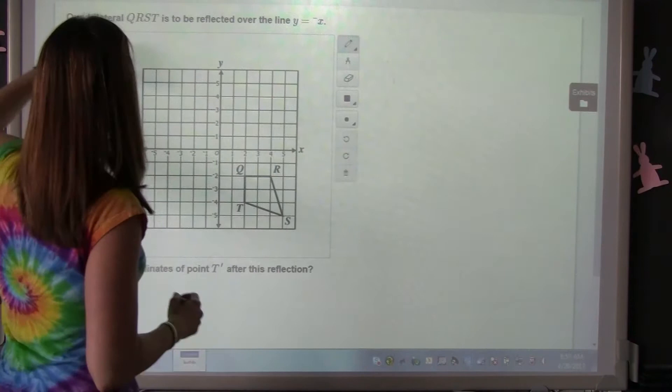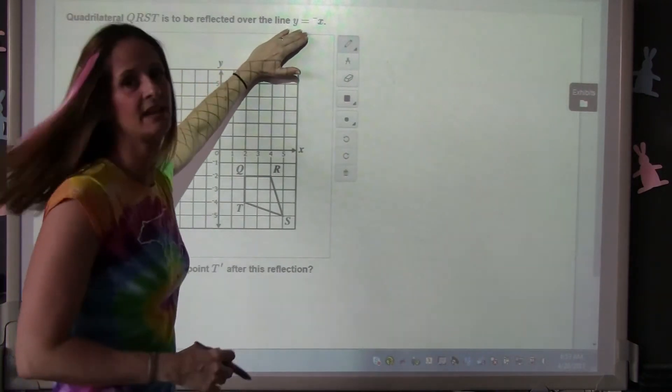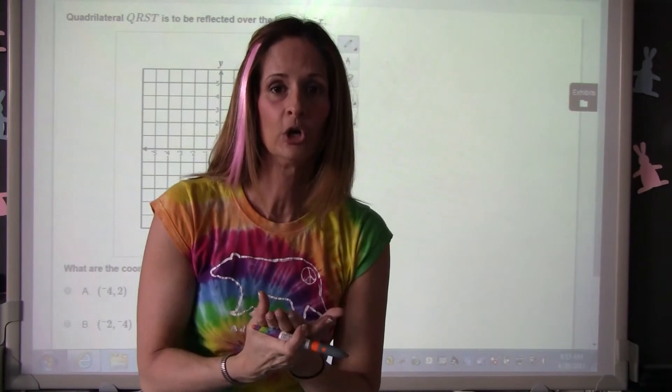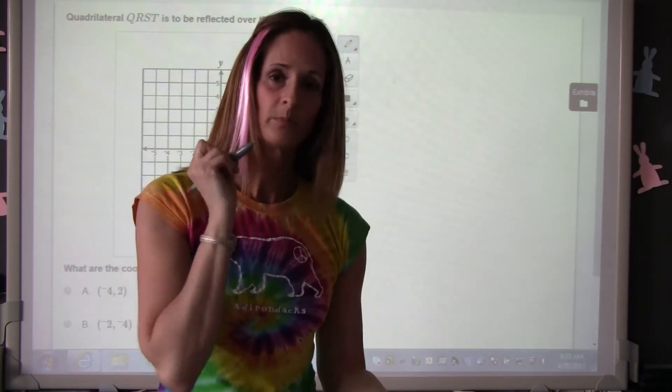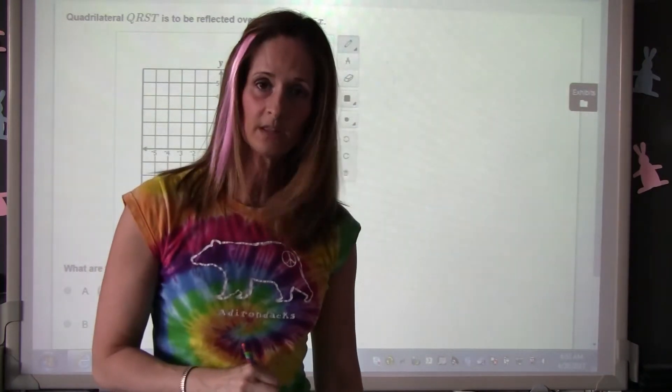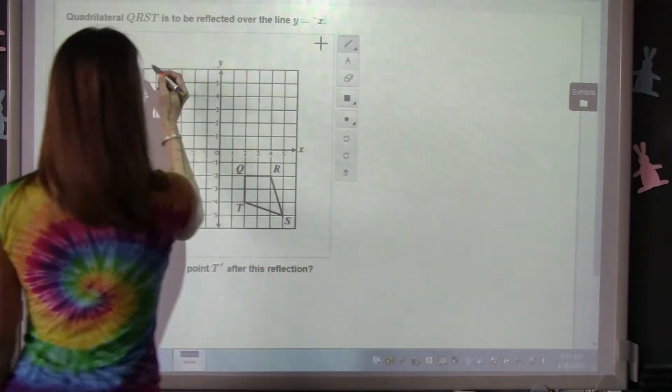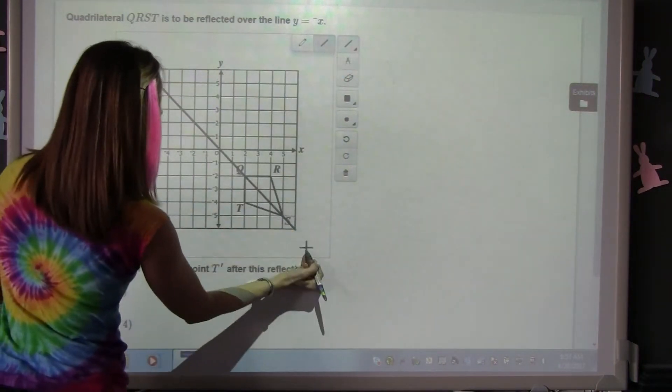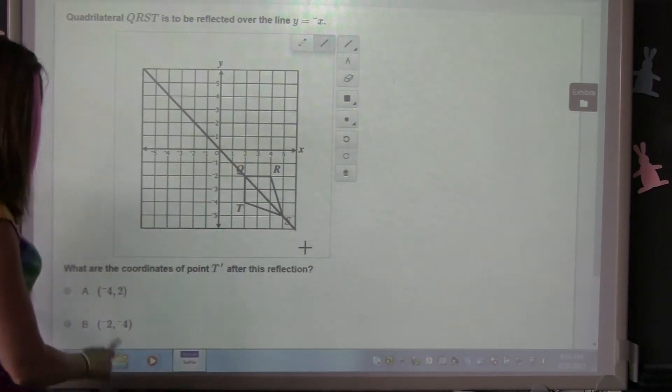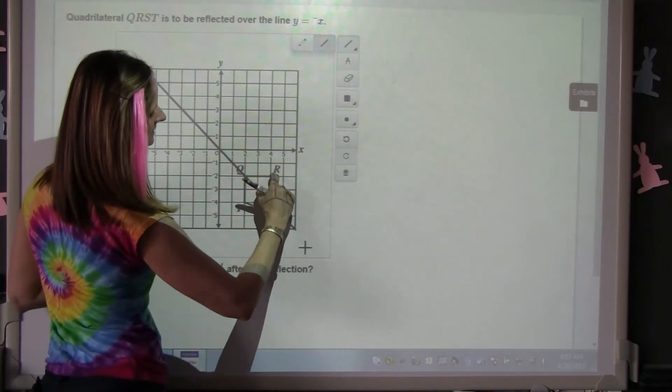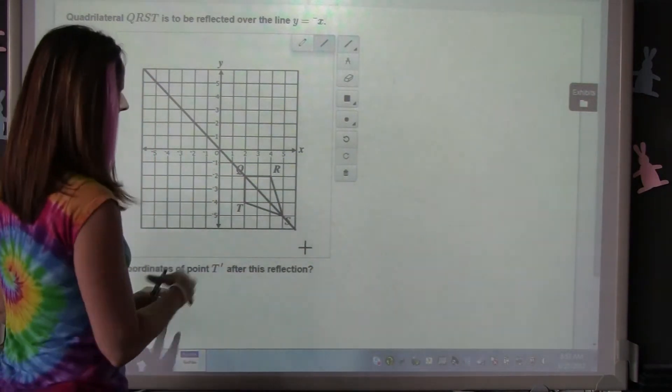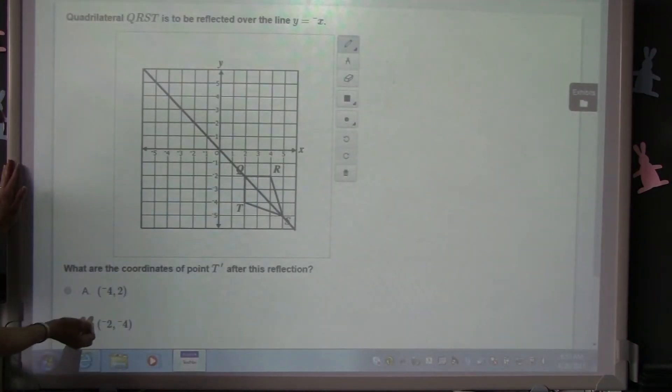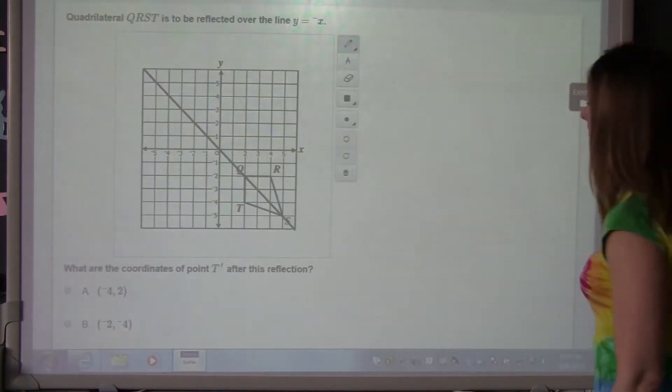This type of question: quadrilateral QRST is to be reflected over the line y equals negative x. If you don't remember how to graph y equals negative x, you also have a calculator. Take out your graphing calculator. Press y equals, graph negative x, take a look at the line. Oh yeah, it looks like this. I forgot to show you how to use this tool. If you go to the pencil and instead of choosing the pencil, choose straight line. There's your y equals negative x. Then you can figure out where does T. T prime is going to be one away from the line, so it's one away on the other side. It's one diagonally if you're counting. For this one, you'd select your answers down here. I just have to scroll down to get the other answers.